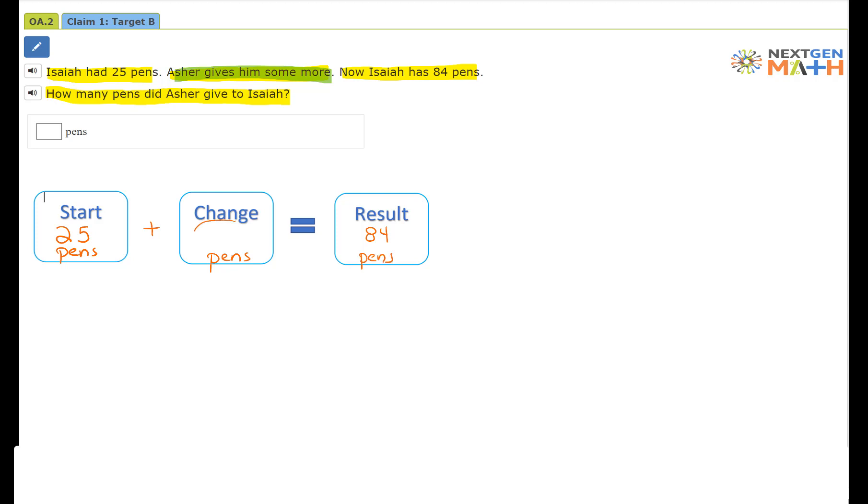How many pins did Asher give to Isaiah? So now let's solve this problem. We have 84. If we subtract the 25 pins, that difference is how many pins Asher gave to Isaiah.